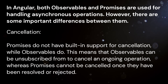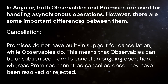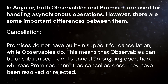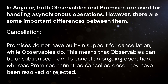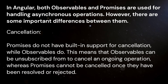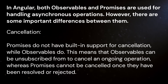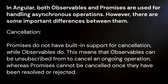Cancellation: Promises do not have built-in support for cancellation, while observables do. This means that observables can be unsubscribed from to cancel an ongoing operation, whereas promises cannot be cancelled once they have been resolved or rejected.